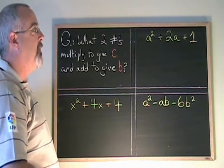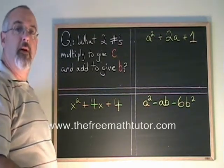The first thing we do when we're factoring a simple trinomial is we define our a, b, and c.